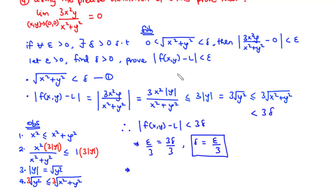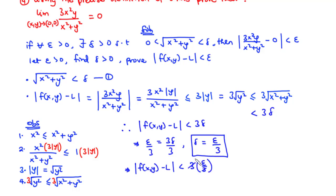Now we prove that the absolute value of f(x, y) minus L is indeed less than epsilon. From the inequality, the absolute value of f(x,y) minus L is less than 3 times delta, and substituting delta equals epsilon over 3, three cancels three, and we are left with the absolute value of f(x, y) minus L less than epsilon. Hence, the proof. That's it for today's video. Thanks for watching and see you in my next video.